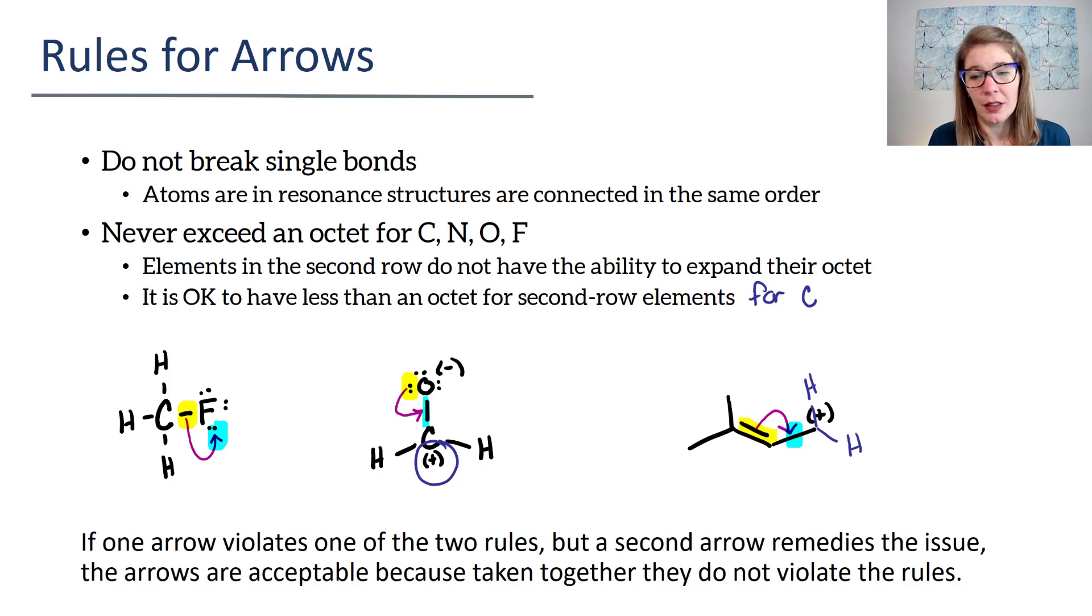To wrap up, this arrow is perfectly fine. We are allowed to draw that arrow. Now notice how all of my examples only had one arrow. You can draw more than one arrow on a resonance structure to generate a new one. Sometimes what will happen is the first arrow looks like it's violating a rule, but the second arrow fixes that violation and together they're okay. What I want to do is look at some more examples.